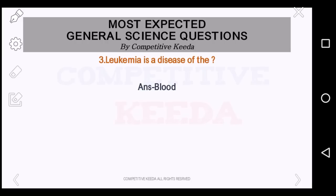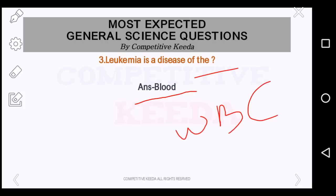Leukemia is the disease of what? The answer is blood. It is a type of cancer that usually begins in the bone marrow. It results in a high number of abnormal WBCs — white blood cells. There is an abnormal rise in the number of WBCs in comparison to the RBCs. So this is called leukemia.